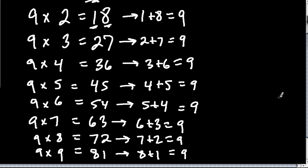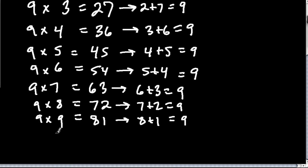Now 9 times 10 is 90, and it still works, because 9 times 10 is 90, and 9 plus 0 is still just 9. What about 9 times 11? Well, we'll get back to that one in a minute.